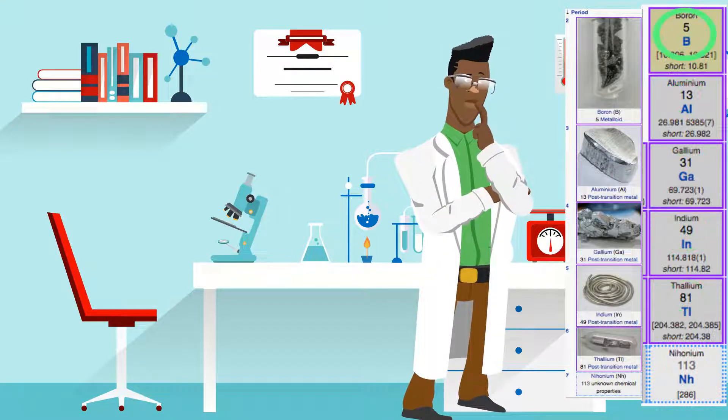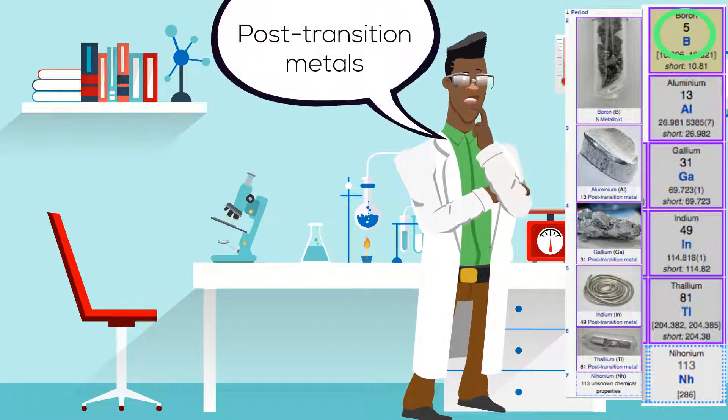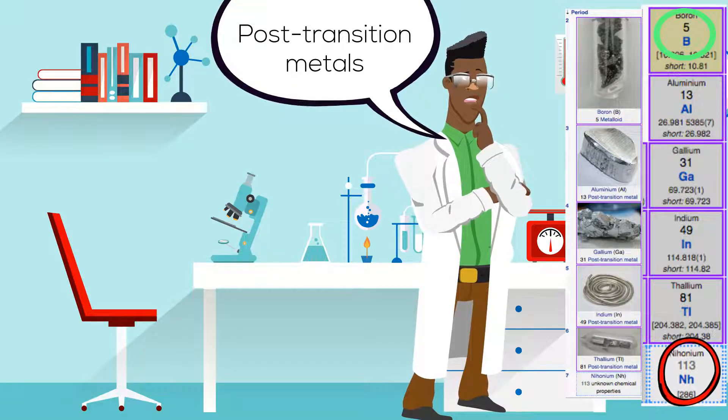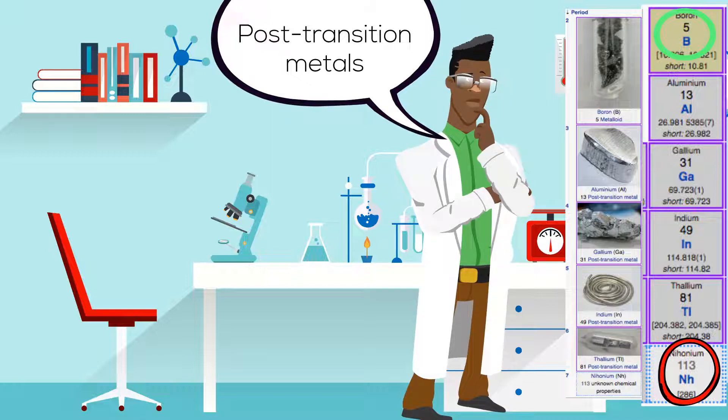The elements of the Boron Group are post-transitional metals except for Boron, which is a metalloid, and Nihonium, which is a synthetic chemical that is extremely radioactive.